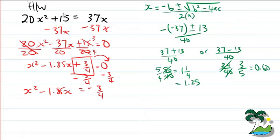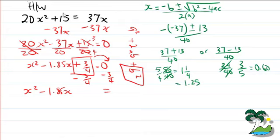Now we need to find what number to add to complete the square. Remember the equation a² plus 2ab plus b² — we're looking for b². Using the form 2xb, we can see that the middle term minus 1.85 is actually equal to 2xb in our equation.